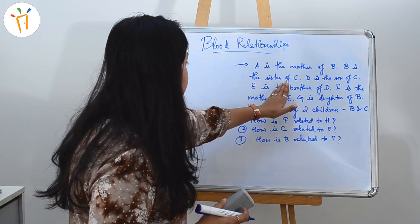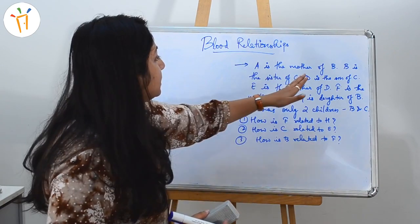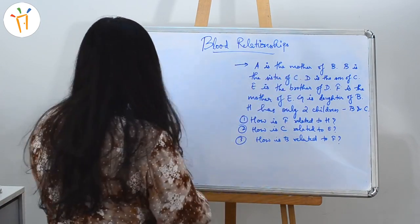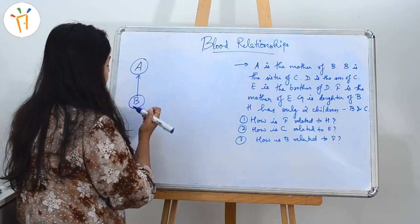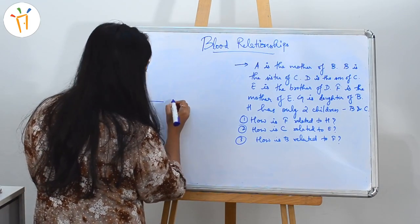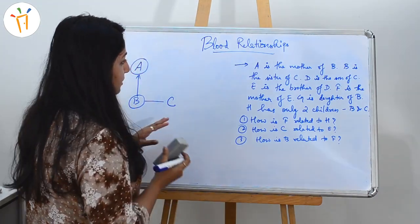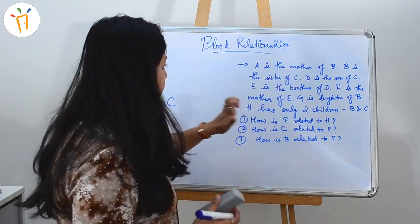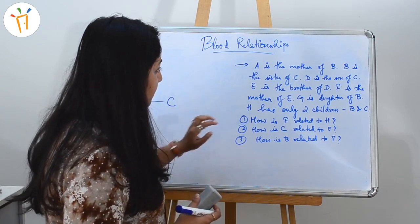It says B is the sister of C. Again, B is said to be the sister of C, which means B will be female here because B is the sister and sibling of C. We will write C here, but the gender of C is not specified, so let's keep it as it is.